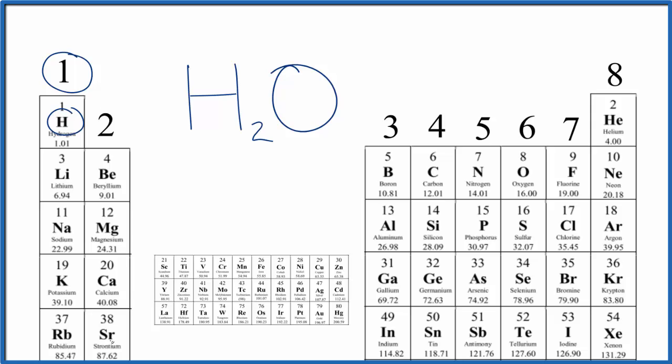Group two, they have two valence electrons. We skip the transition metals. There's a link in the description if you need to do that. In general, we don't worry about it.